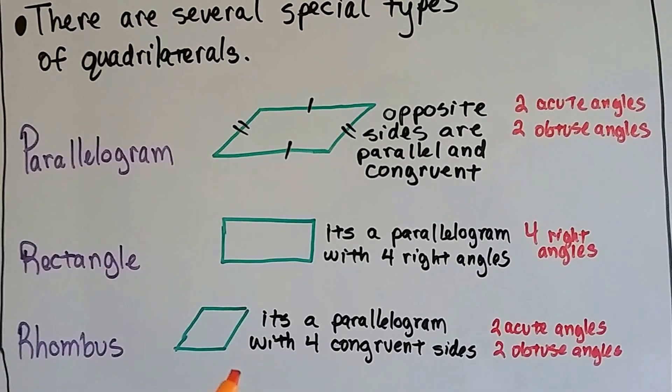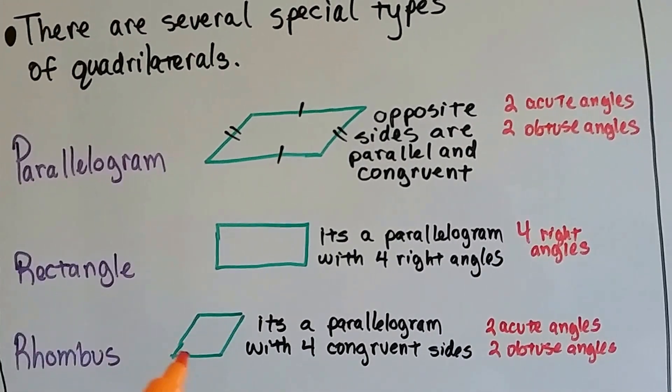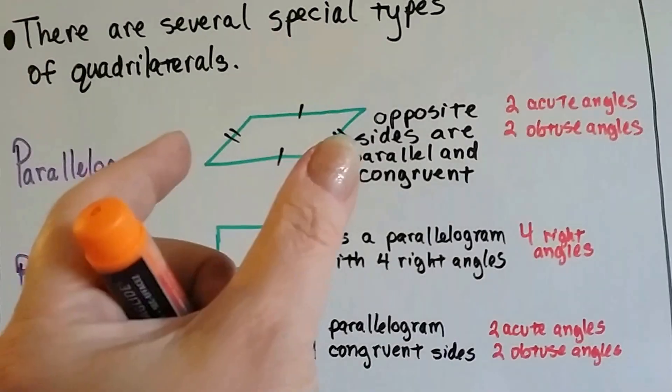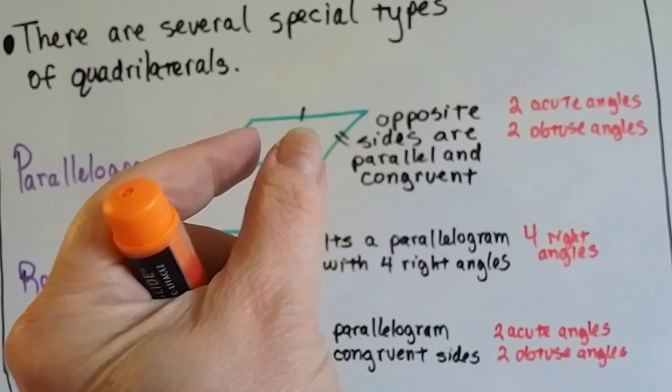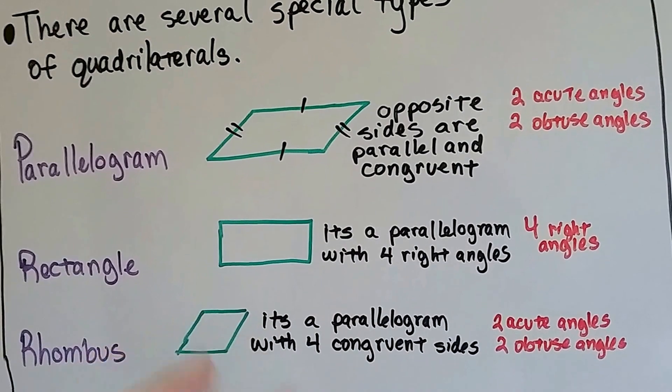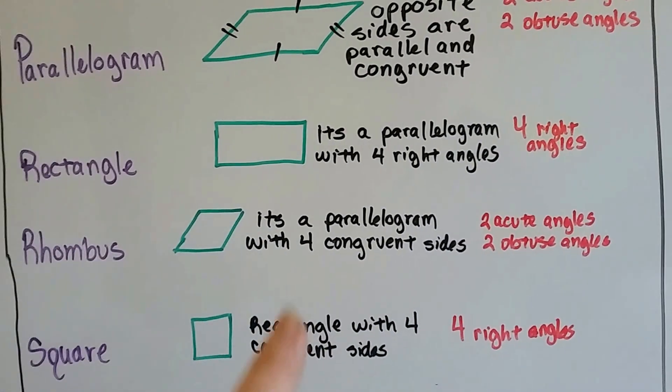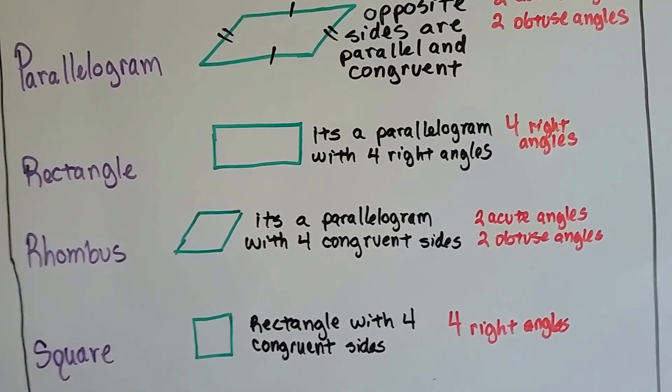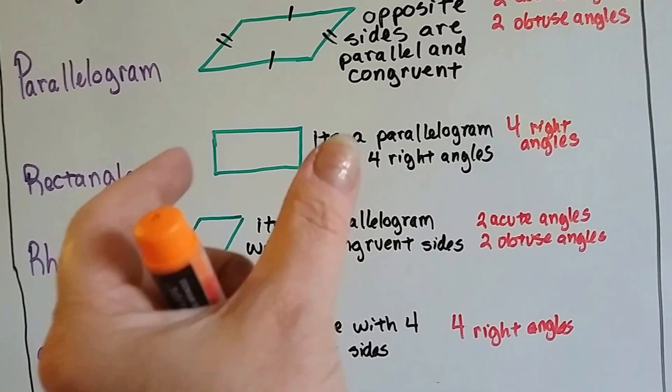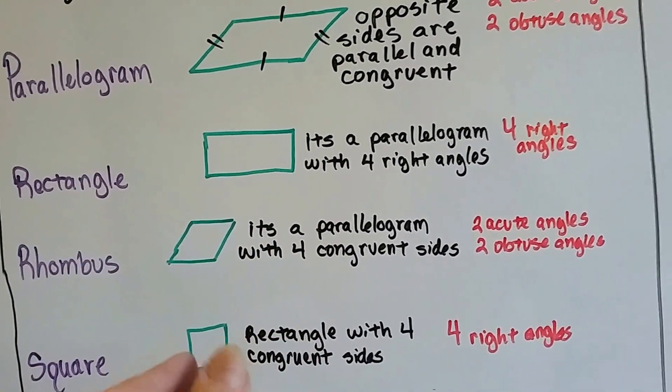A rhombus is a parallelogram with four congruent sides. All the sides are the same length. They took the parallelogram and they squished it together. See? A square is a rectangle with four congruent sides. So it's like they took the rectangle and squished it together to make the square.